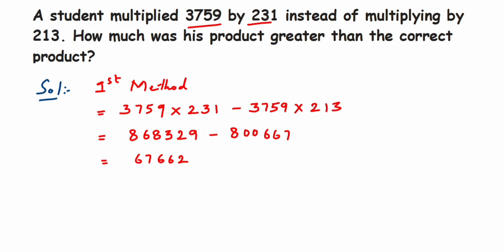This is the second method. Here, what you can do is we have to multiply 3759 multiplied by 231 minus again the same thing, 3759 multiplied by 213. You can see that the first number is the same in both, right?